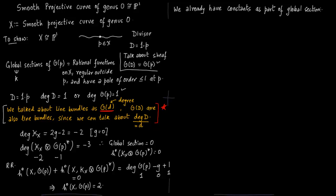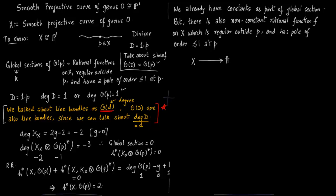Constants are already part of global sections. But there is also a non-constant rational function x. Maybe you call this function as f which is regular outside p and has a pole of order less than or equal to one at p. So I am just copying down the definition of global sections of O of p. We have constant. The dimension is 2.